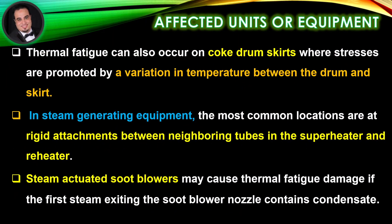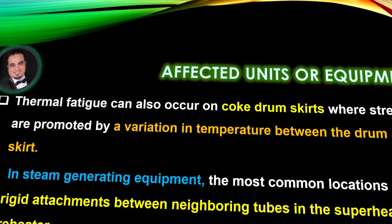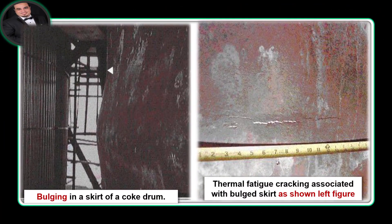Thermal fatigue can also occur on coke drum skirts where stresses are promoted by a variation in temperature between the drum and skirt. In steam generating equipment, the most common locations are at rigid attachments between neighboring tubes in the superheater and reheater. Steam-actuated soot blowers may cause thermal fatigue damage if the first steam exiting the soot blower nozzle contains condensate. Figures illustrate bulging in a skirt of a coke drum due to thermal cycling and associated thermal fatigue cracking.